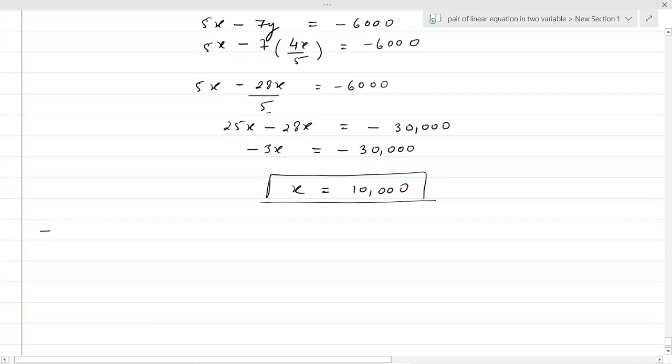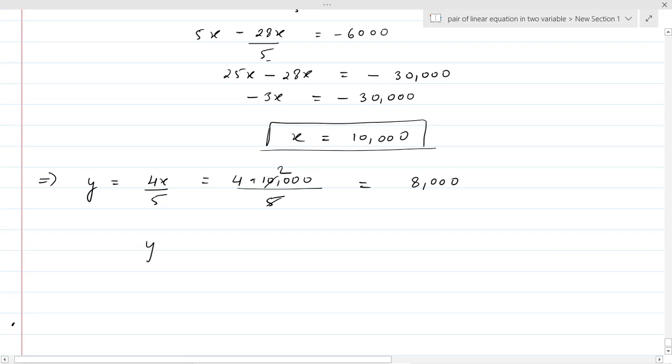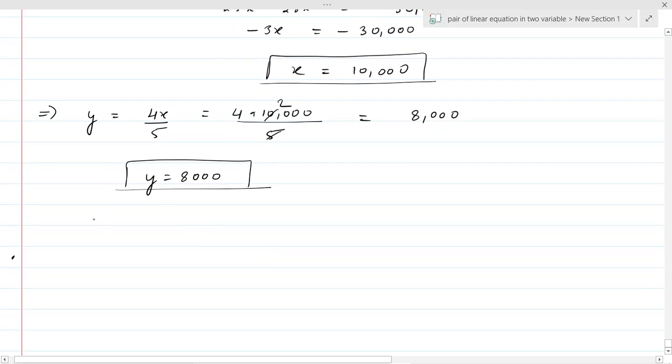Now, from equation first we had Y equal to 4X upon 5. So 4 into 10,000 upon 5, which equals 8,000. So Y equal to 8,000.